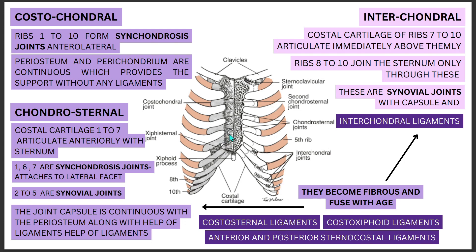Around the synovial chondrosternal joints, the capsule is continuous with the periosteum — the outer layer of the bone. We also have ligaments which reinforce this capsule for stability. Specifically, there is the anterior and posterior sternocostal ligament, and at the xiphoid process we have the costal xiphoid ligament joining the chondral part from both anterior and posterior sides. Additionally, there are costo-sternal intra-articular ligaments, similar to those seen in costovertebral joints, which divide the two facets at the second level.